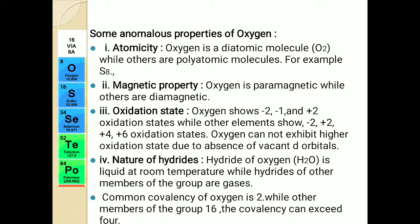In peroxides, oxygen shows a minus one oxidation state, while in OF₂ it shows a plus two oxidation state. But since the rest of the elements have vacant d-orbitals, they can also show positive oxidation states along with minus two — that means plus two, plus four, and plus six — whereas oxygen cannot show higher oxidation states.